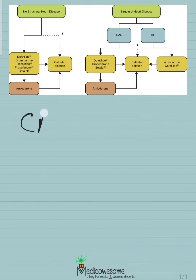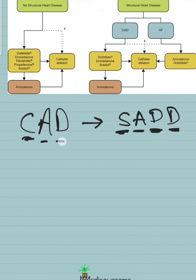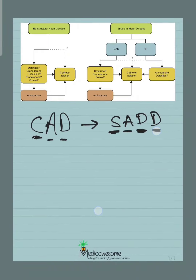In coronary artery disease, patients are 'SAD' — that's how I remember the preferred antiarrhythmics: sotalol, amiodarone, and dofetilide. Amiodarone is kind of the last line because of all the side effects associated with it. So patients with CAD are SAD.